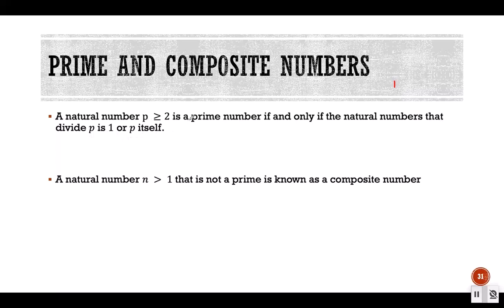Let's write down a few numbers. Since p must be greater than or equal to 2, we are not going to consider 1 — one is not a prime number. We are going to start from number 2 and find out whether a number has a divisor which is not 1 or the number itself.